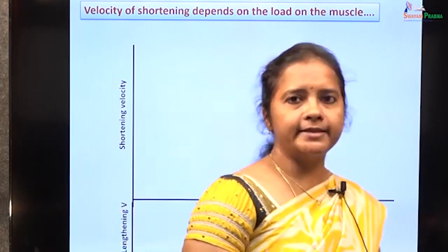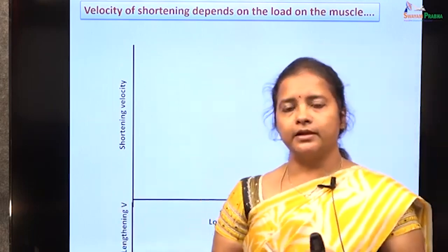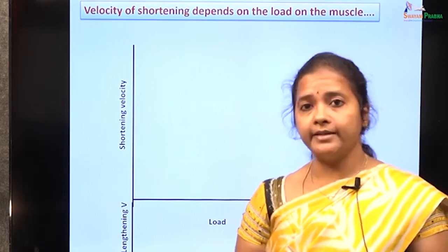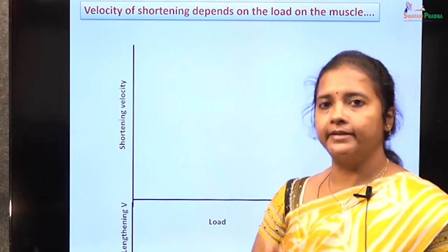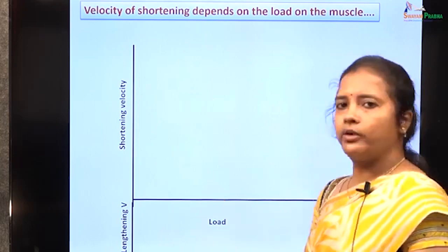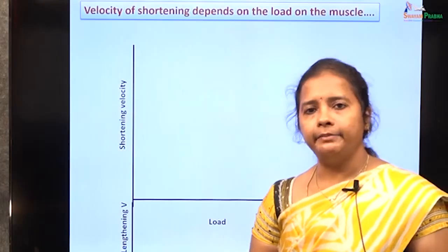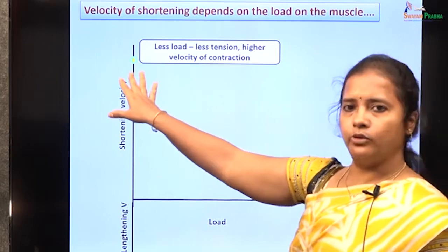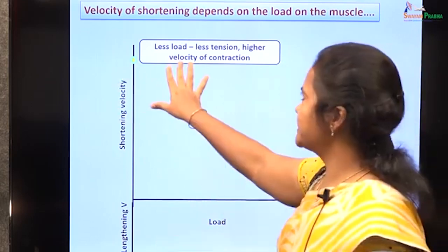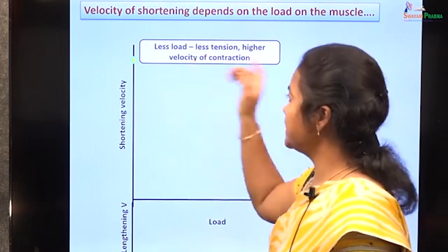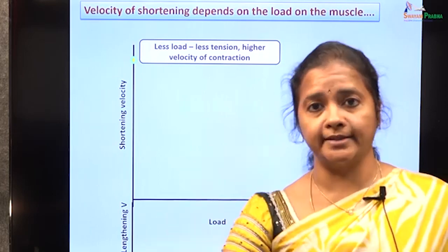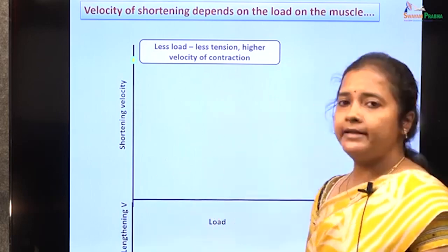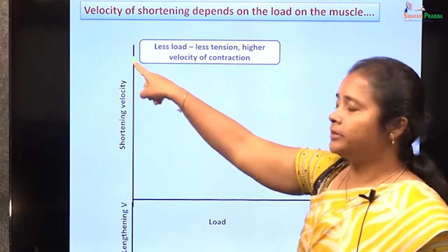The load-velocity relationship describes how fast a muscle can contract depending on the load acting on it. Lighter objects can be lifted faster than heavier objects. With a small load — for example, lifting a chalk piece — very little tension needs to be developed and the velocity of contraction is very fast because the load is small. The shortening velocity is high when there is little to no load acting on the muscle.